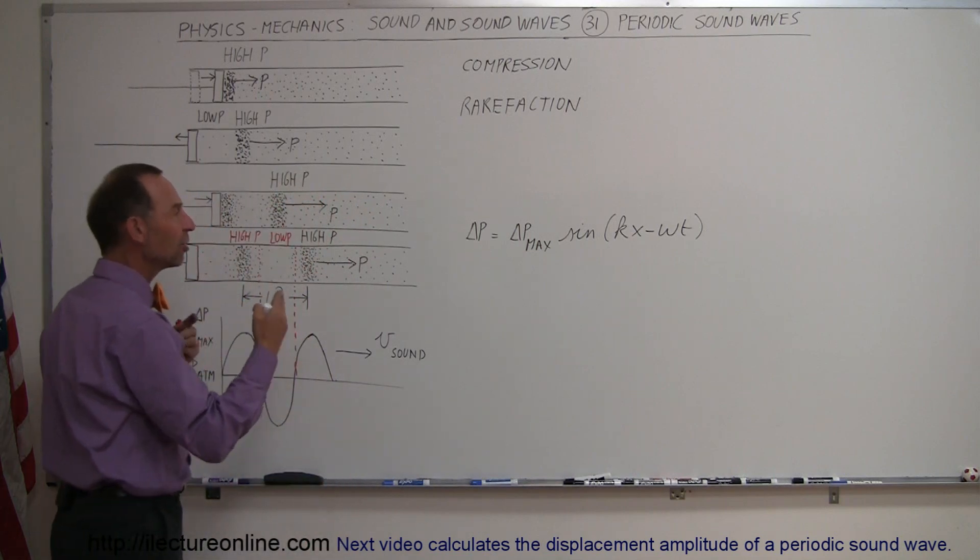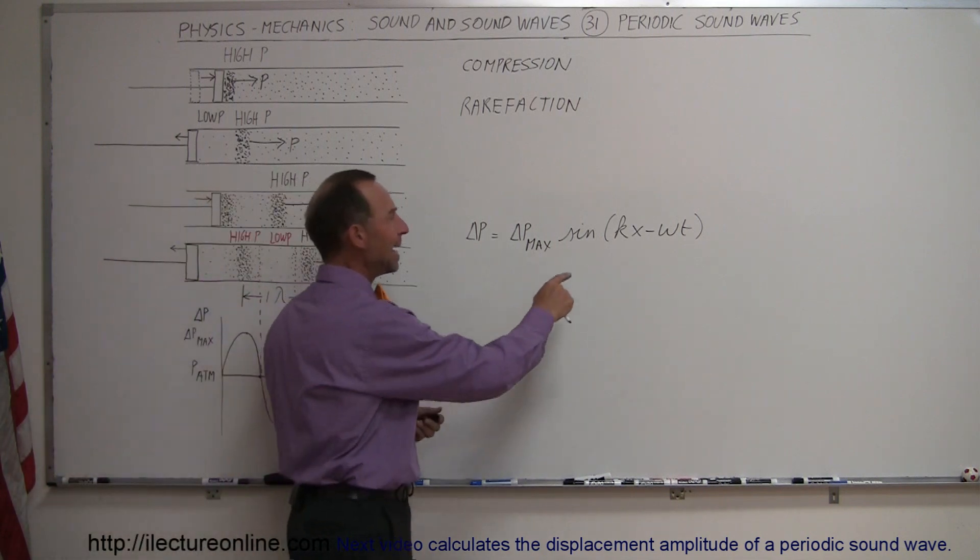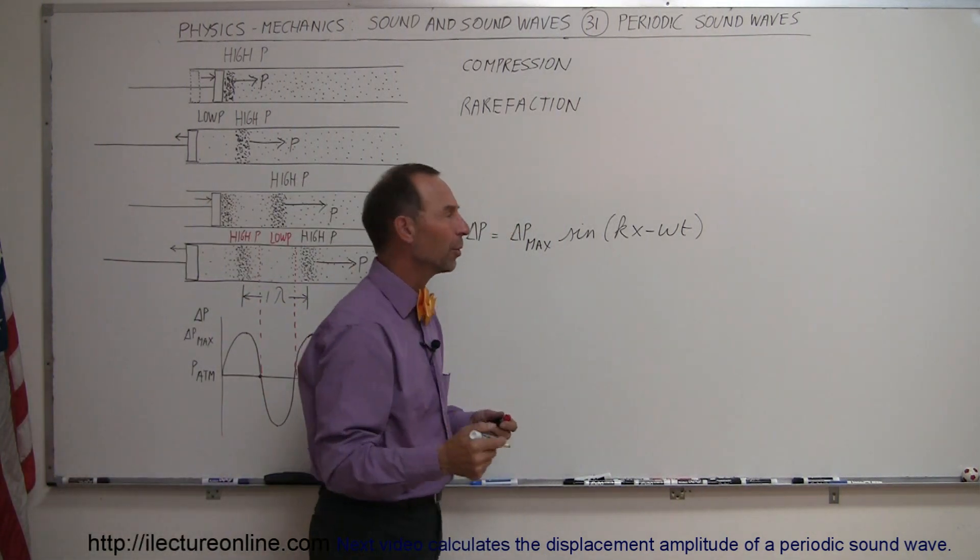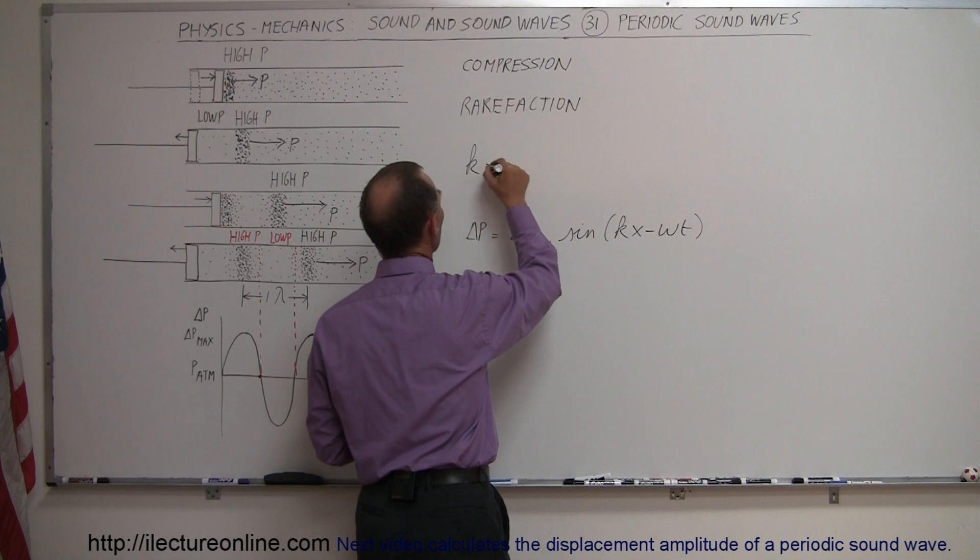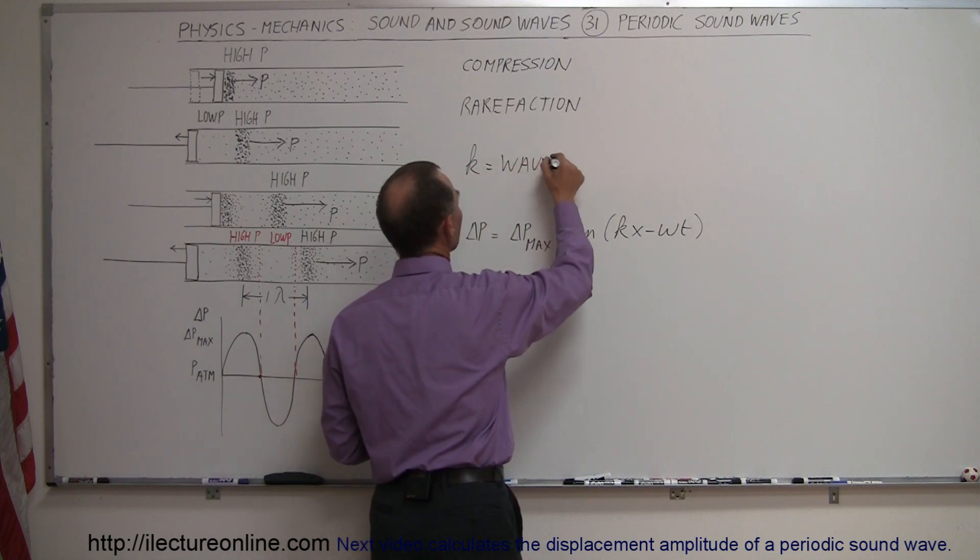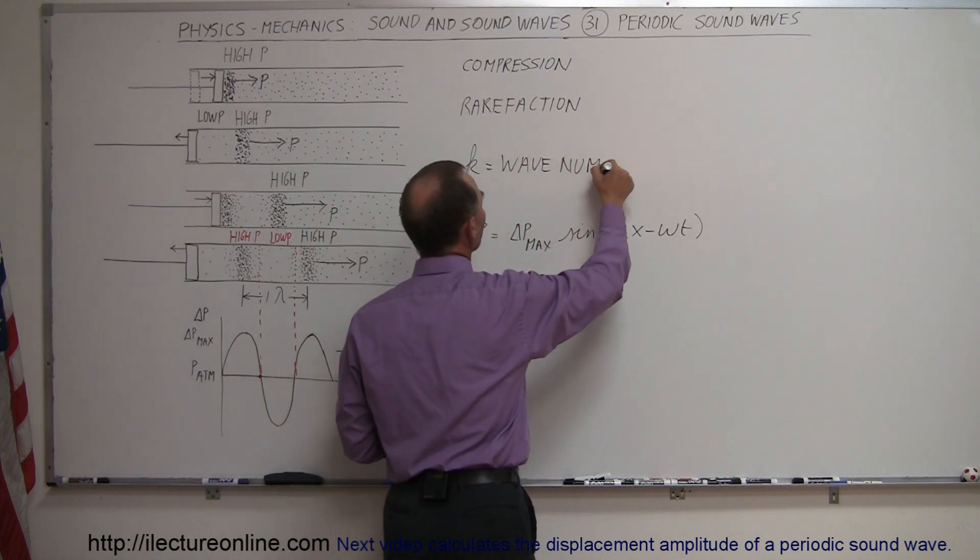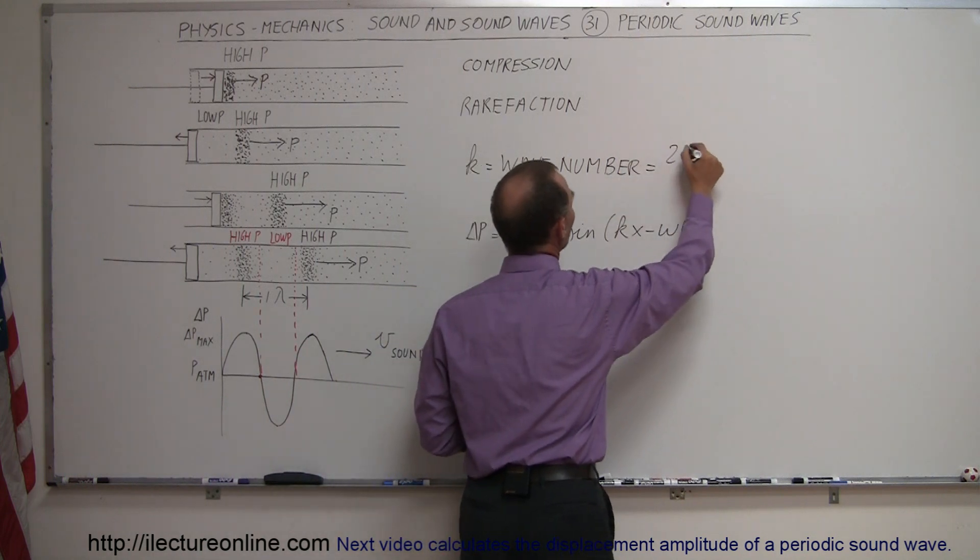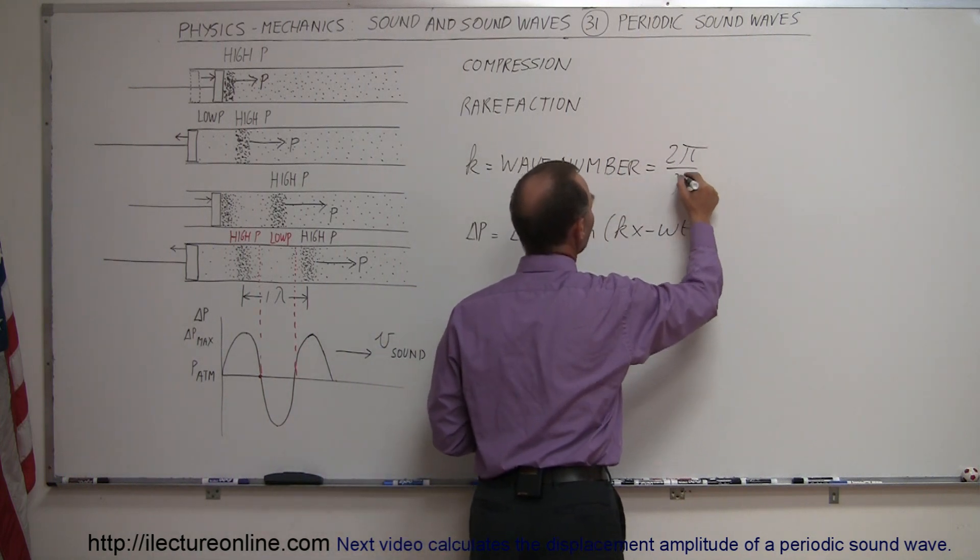The k is the wave number, defined as 2π divided by lambda, so there's definitely a relationship between the wavelength and the wave number.